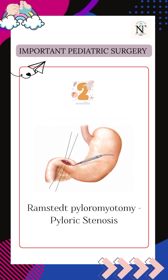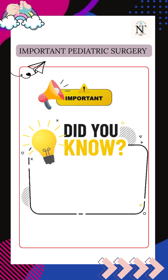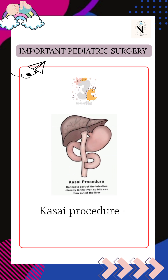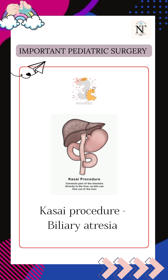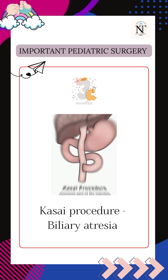Ramstedt pyloromyotomy is the procedure of choice for pyloric stenosis. Notably, your finger is used to guide the incision and prevent damage to the mucosa during pyloromyotomy. The third one is the Kasai procedure, performed in infants with biliary atresia to